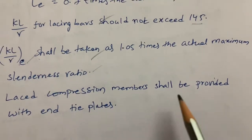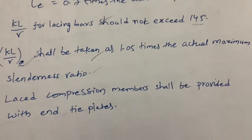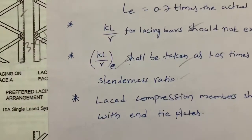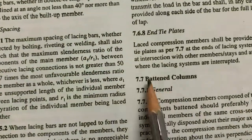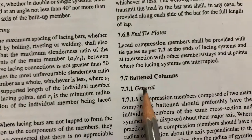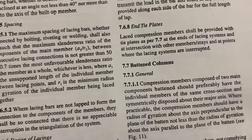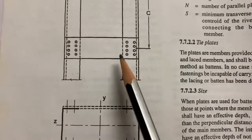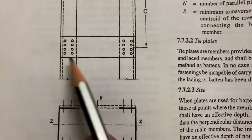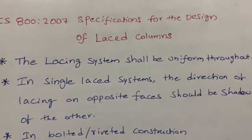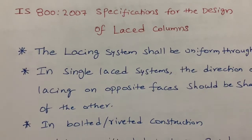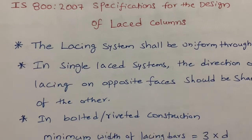Finally, laced compression members shall be provided with end tie plates. As specified in clause 7.6.8 of the code, these tie plates are similar to batten plates. These are the main specifications the code provides for laced columns. Thank you for watching.